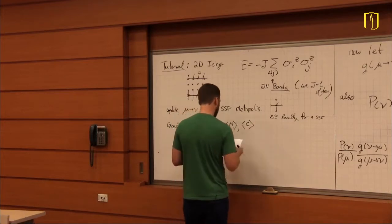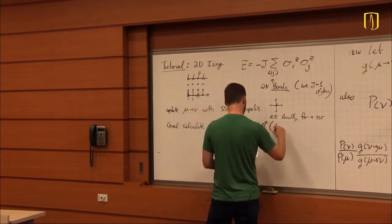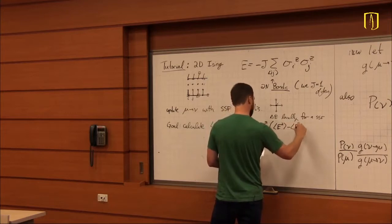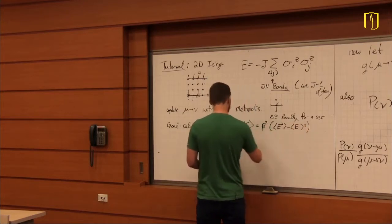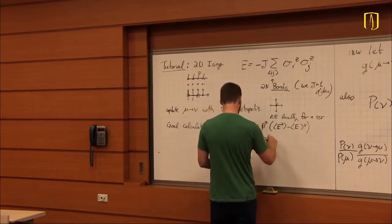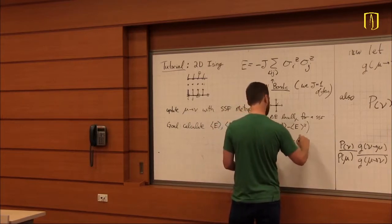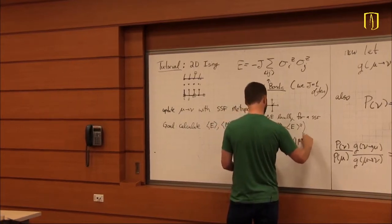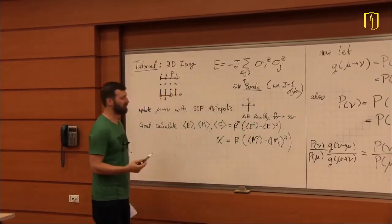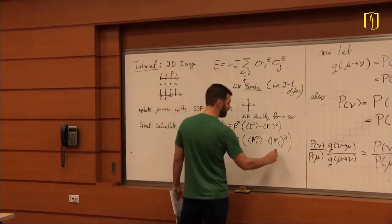We know the specific heat is C = β²(⟨E²⟩ - ⟨E⟩²). The susceptibility, which I haven't derived but you can do yourself for fun, is χ = β times the mean squared fluctuation of the magnetization. We use the absolute value of the magnetization here.